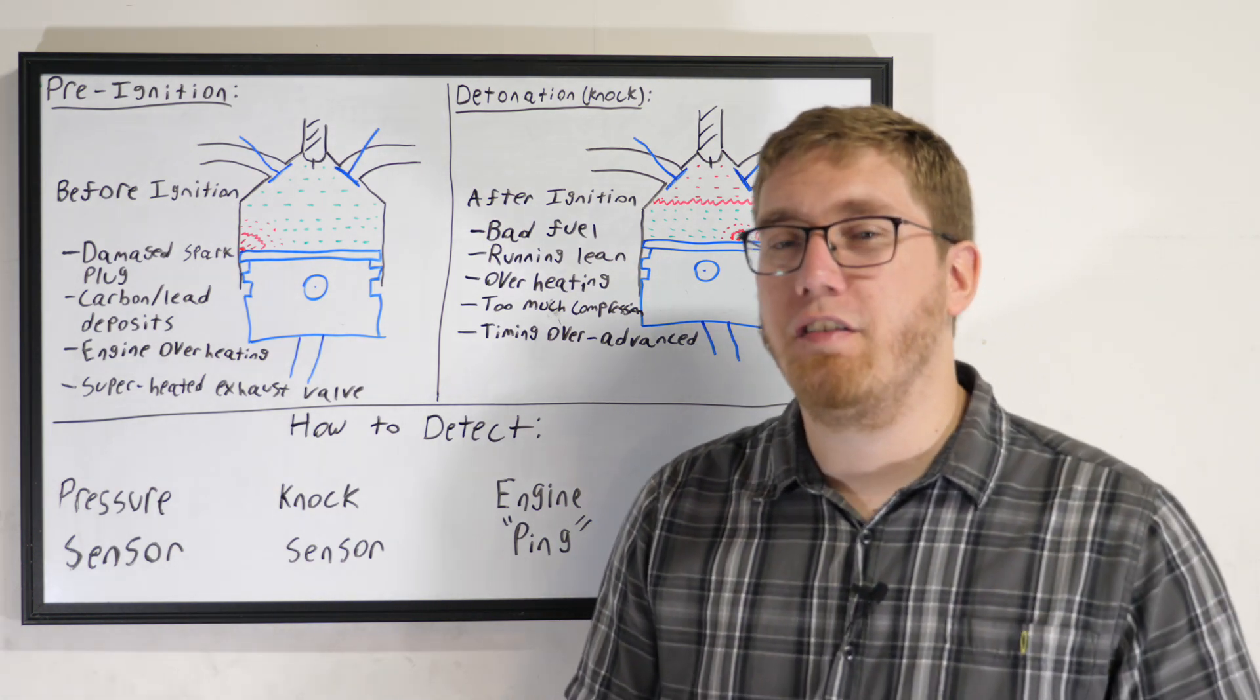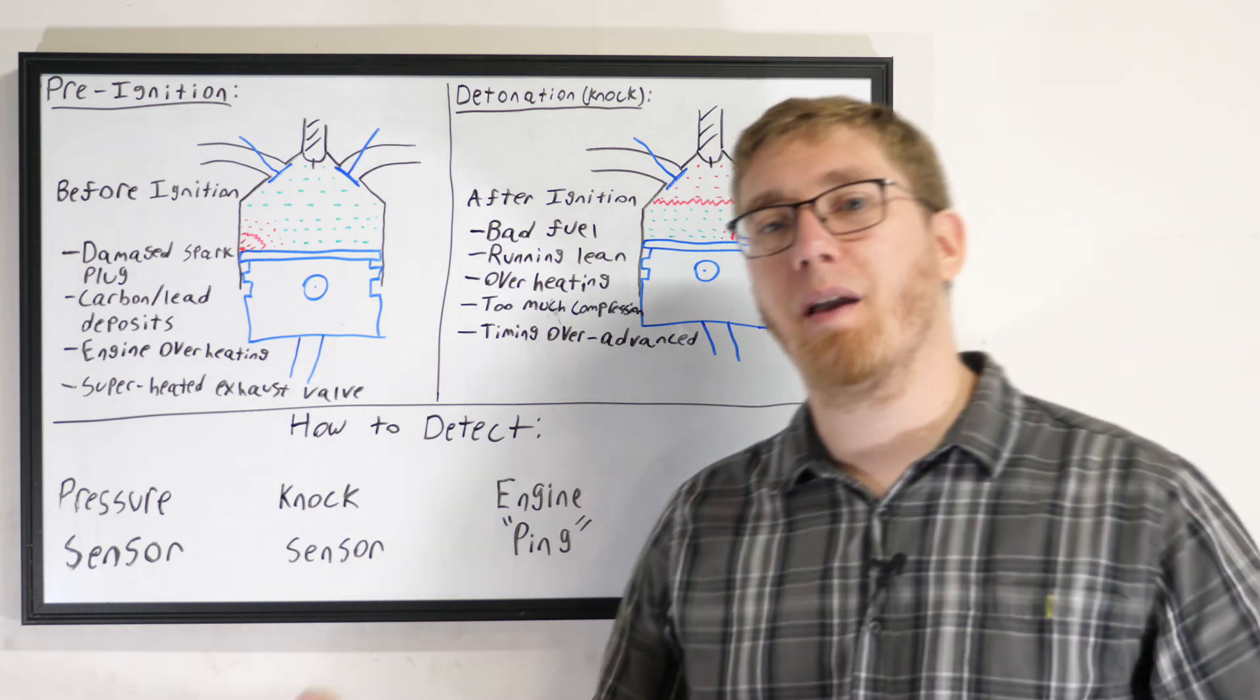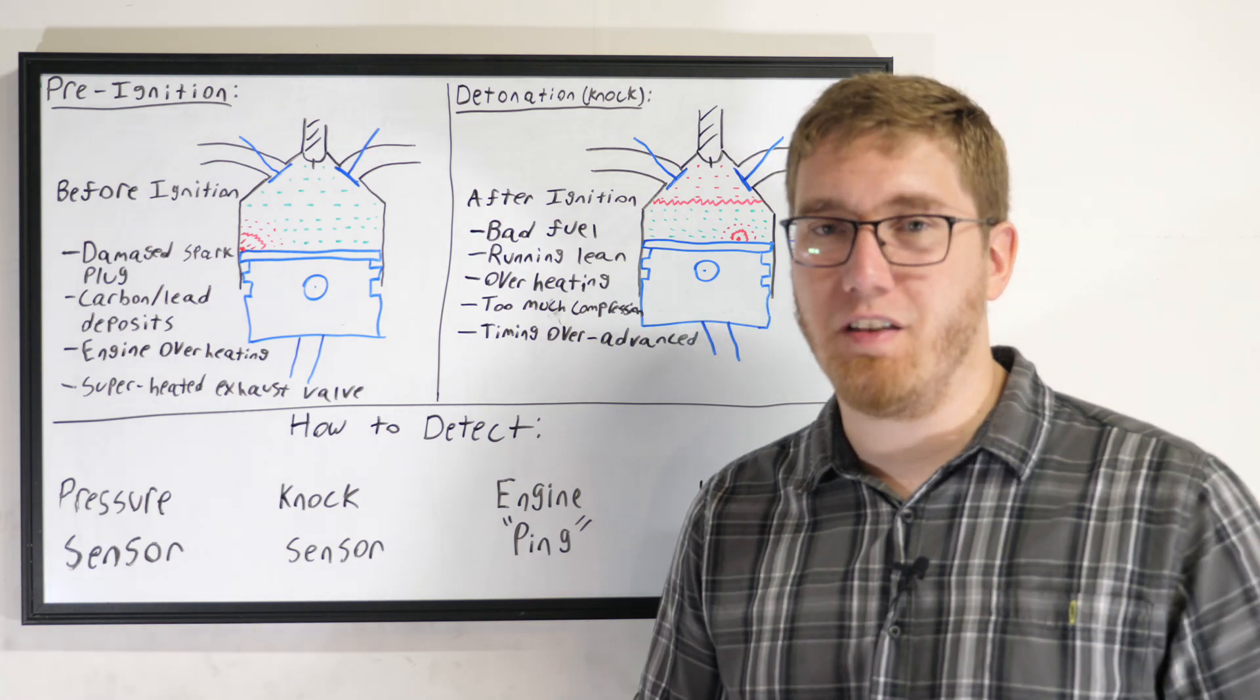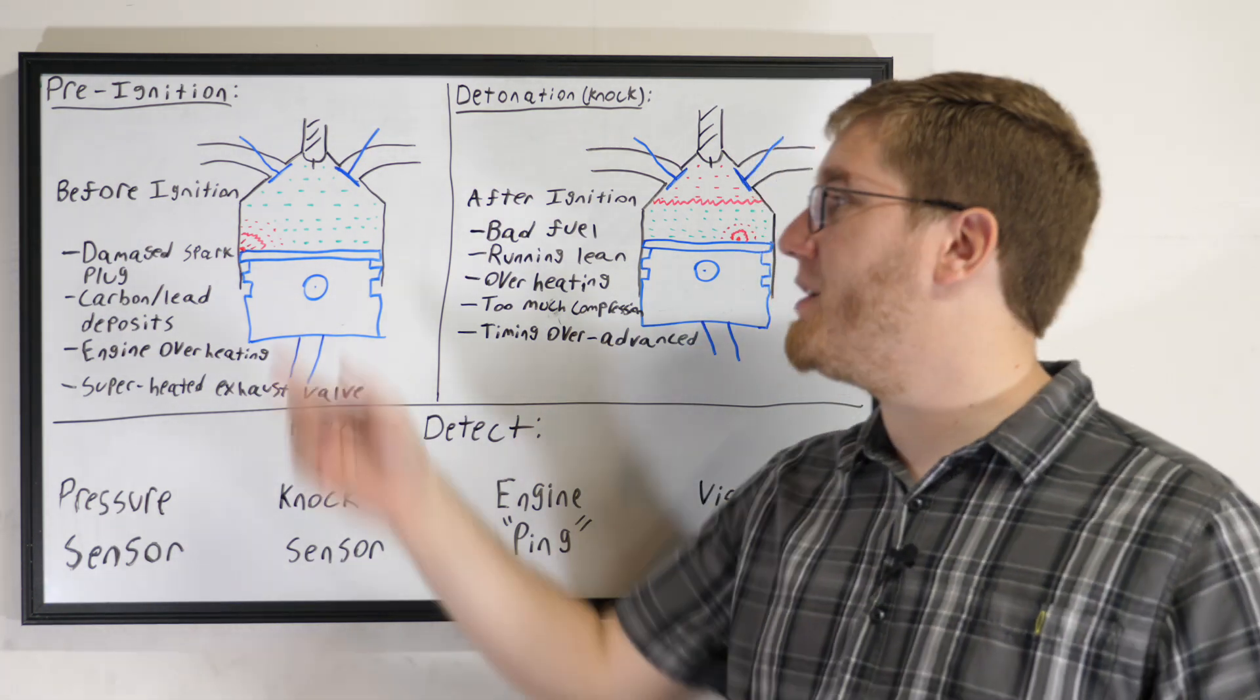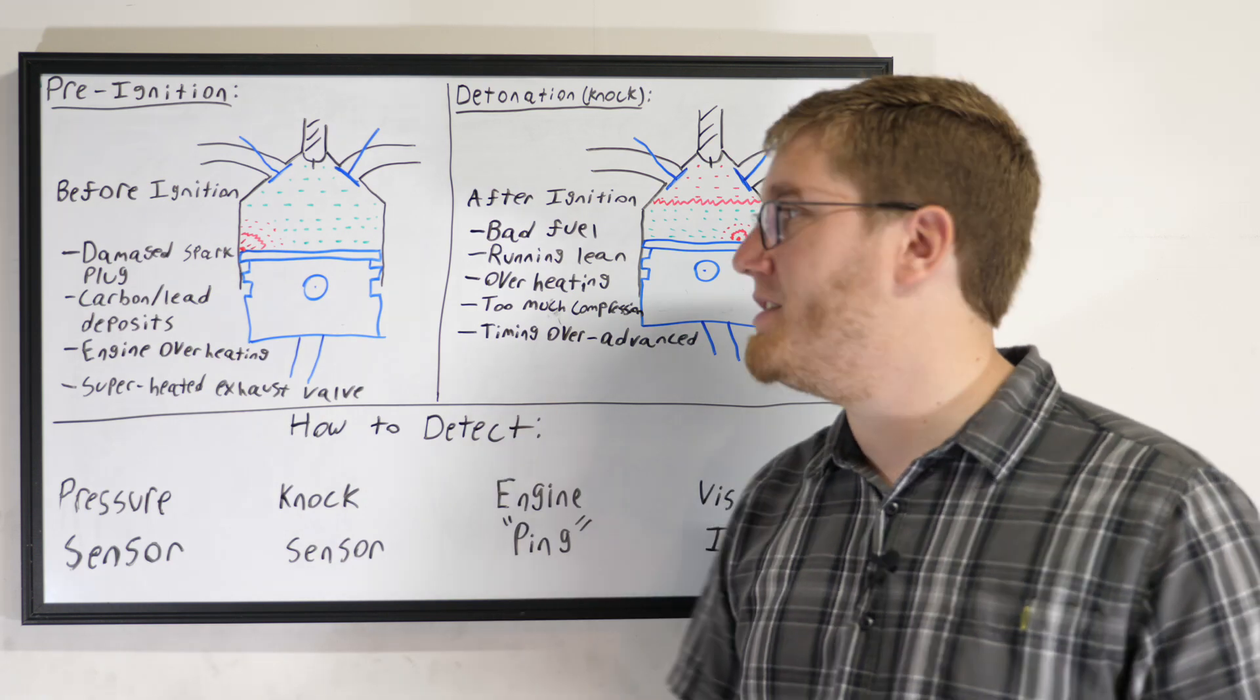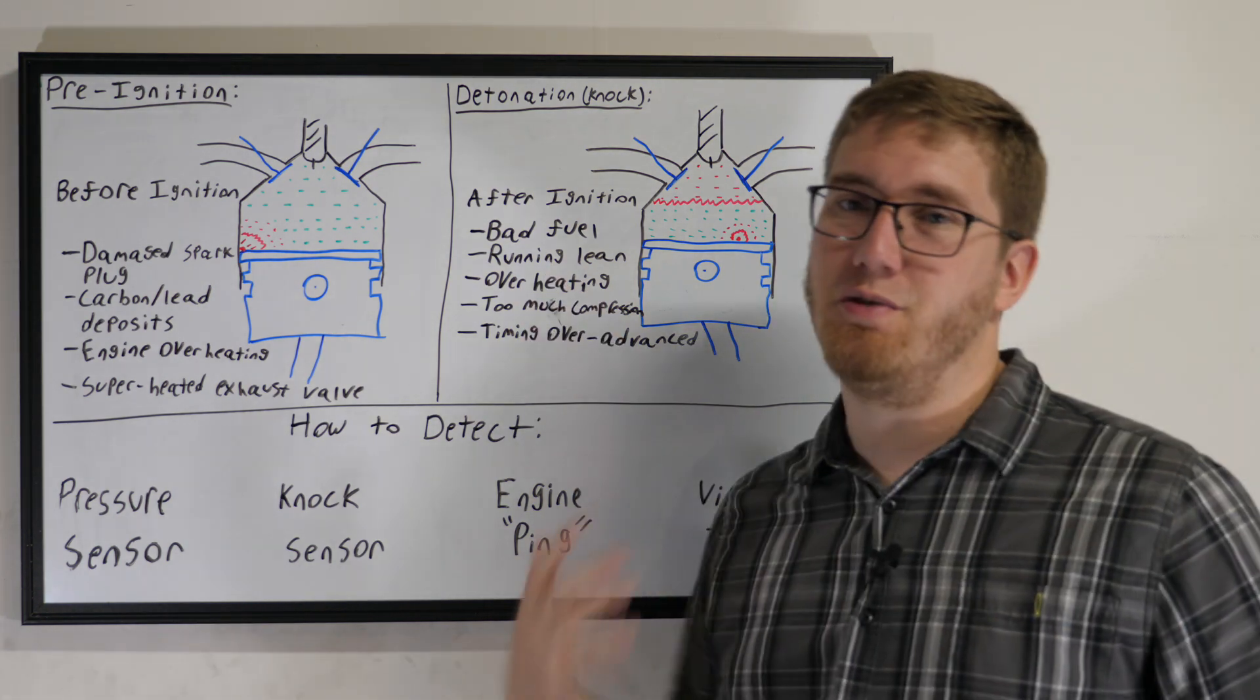So if you normally run regular 87 unleaded, you may want to try running 93 octane, for instance. Higher octane fuels are sometimes needed to try and help prevent some of these knock issues from occurring. If higher octane fuel doesn't work, you may want to take a look at your spark plugs. Your spark plugs might be damaged at this point and might need to be replaced. It would also be a good idea to replace your coil packs at the same time. But if that doesn't help, you may need to start looking at other issues related to your fueling system.